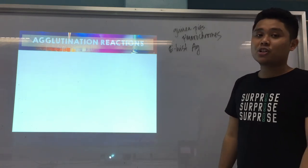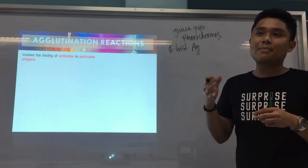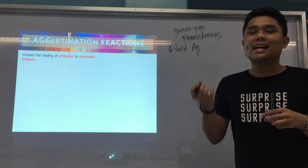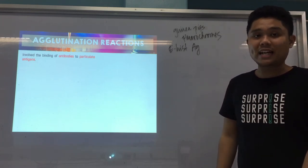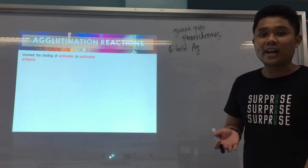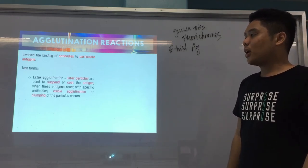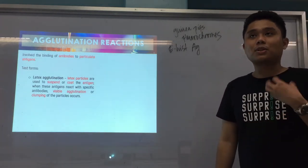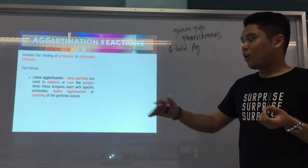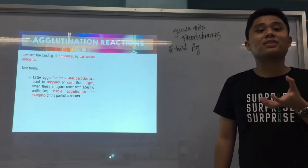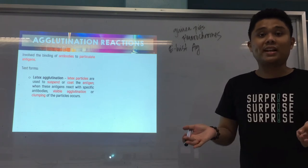Next, we go to agglutination reactions. Agglutination reactions are one of the reactions between your antibodies and antigens. In this type, the antigens are particulate — they are quite big and insoluble, solid in nature. A very good example of an agglutination reaction is your blood typing. Test forms include latex agglutination, where latex particles contain the antigens of the parasite. You test the patient serum for antibodies; if present, they bind, form a lattice, and agglutinate or clump.